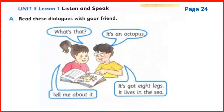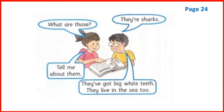Remember, an octopus has got eight legs and it lives in the sea. Now look at this picture - they are talking to each other. She asks: 'What are those?' He replies: 'They are sharks.' She asks: 'Tell me about them.' He replies: 'They've got big white teeth. They live in the sea too.' Remember, sharks live in the sea too and they have got big white teeth.